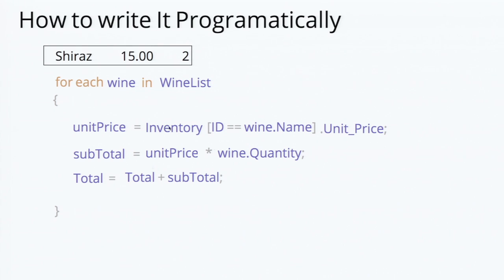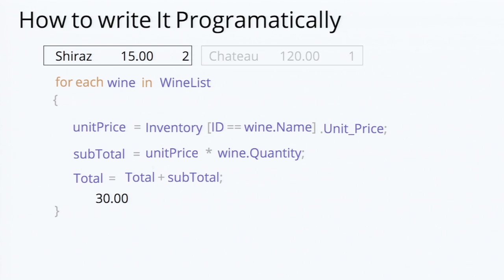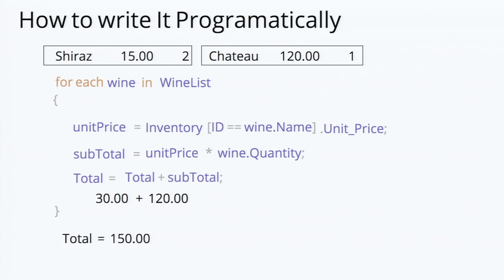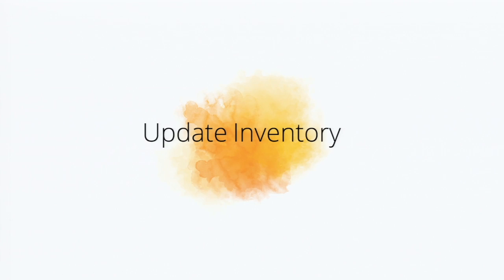The first product is Shiraz — the unit price is 15 and the quantity given by the user is 2. So the vines variable contains these details; the unit price will be 15, and by obtaining the total, the value is 30. Passing on to the second row, the vines variable holds those details. By applying the filter, the unit price is retrieved as 120, and the final subtotal is 120. Since the quantity is 1, by multiplying we get 120. By summing up both values, we obtain the total. So we have iterated through both rows and found the total.